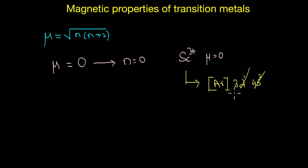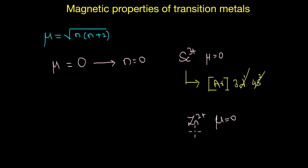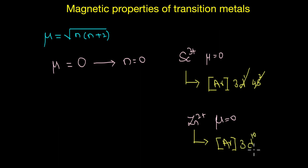Similarly, zinc in the divalent state also has a magnetic moment equal to zero, because Zn²⁺ does not have any unpaired electrons. From its configuration we can see that it has completely filled 3d orbitals. Now let's do a simple calculation to find the magnetic moment for Mn²⁺ ions — pause the video and give it a try.